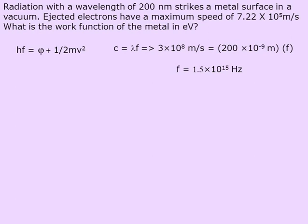Let's move to an example problem. Radiation with a wavelength of 200 nanometers strikes a metal surface in a vacuum. Ejected electrons have a maximum speed of 7.22 times 10 to the fifth meters per second. What is the work function of the metal in electron volts?